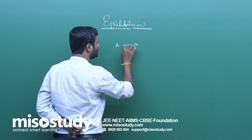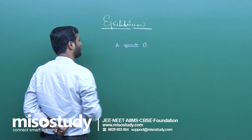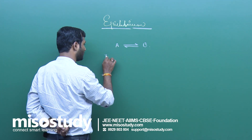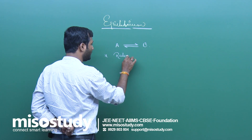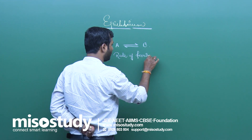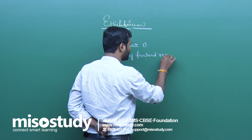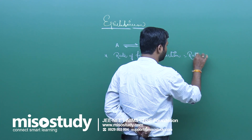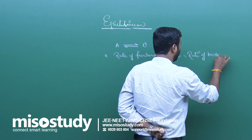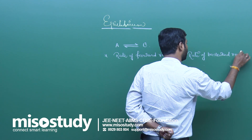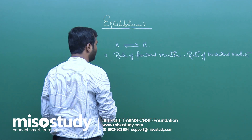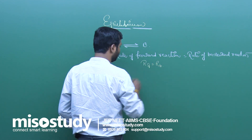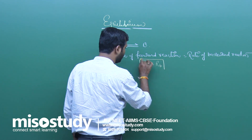Equilibrium is the point or the state where the rate of forward reaction is exactly equal to the rate of backward reaction. Rate of forward reaction equals rate of backward reaction, that is RF equal to RB. This is the first case of equilibrium.